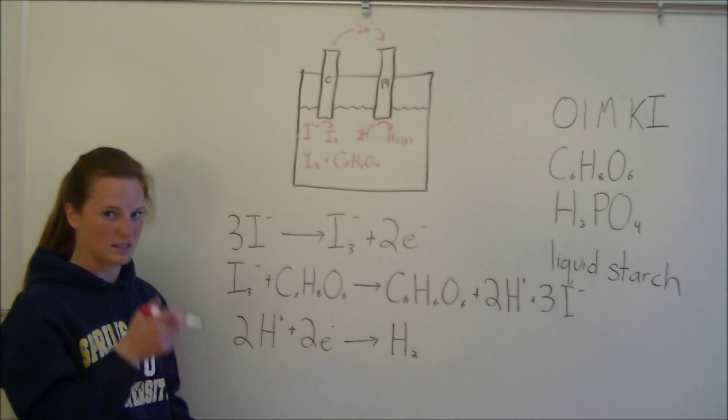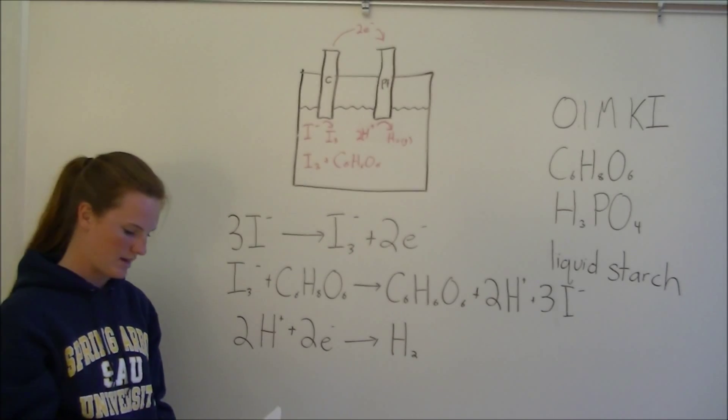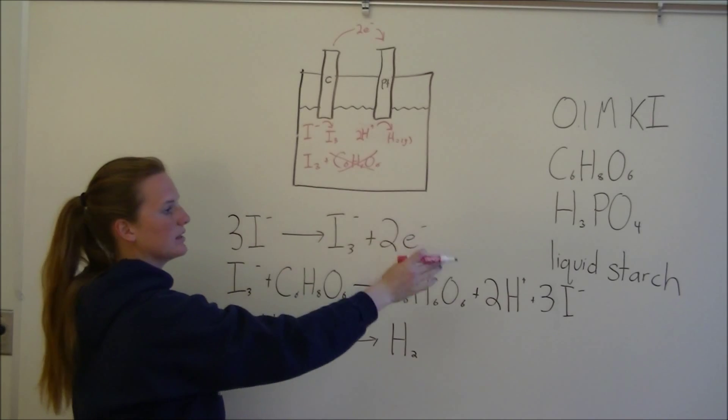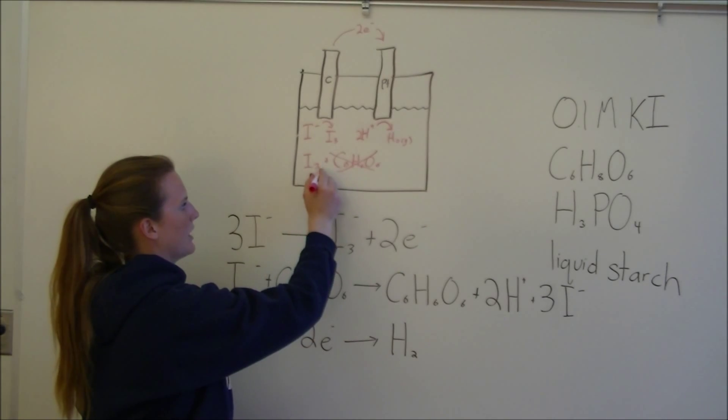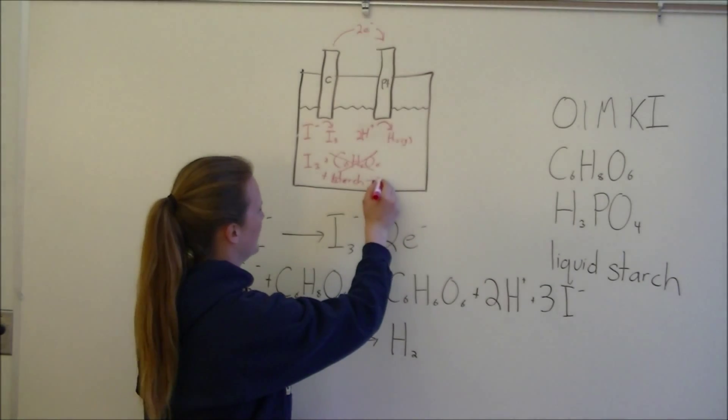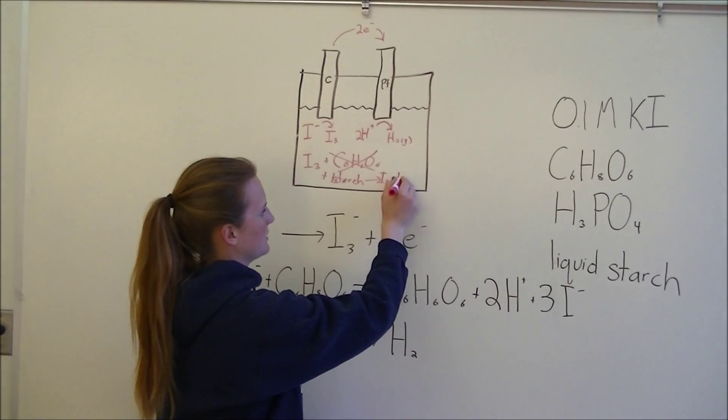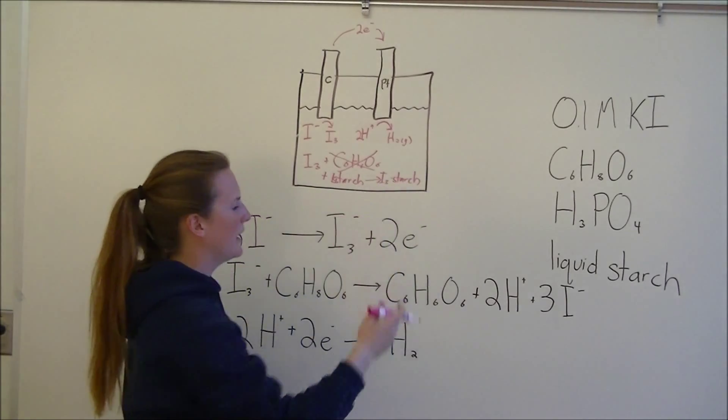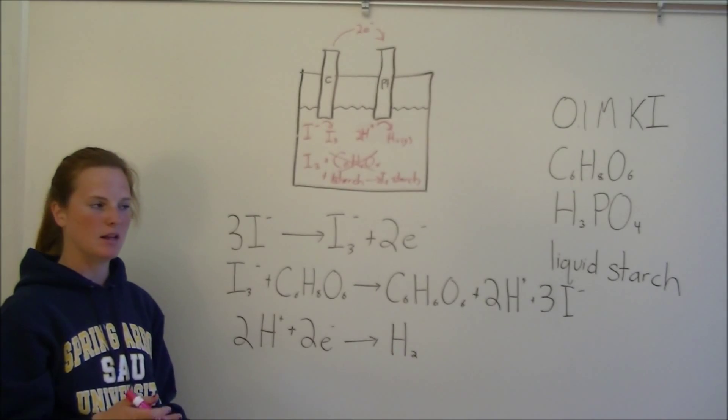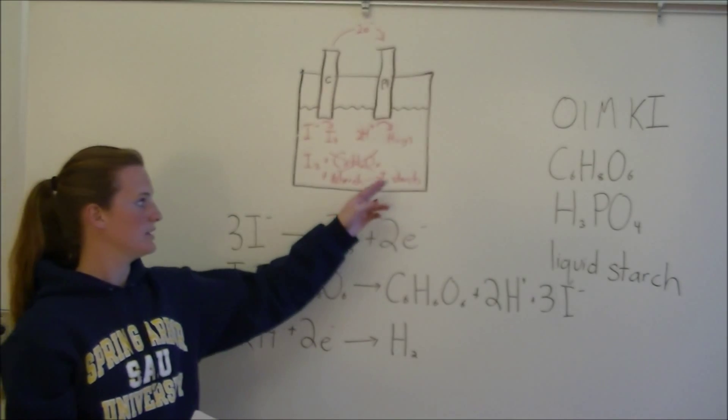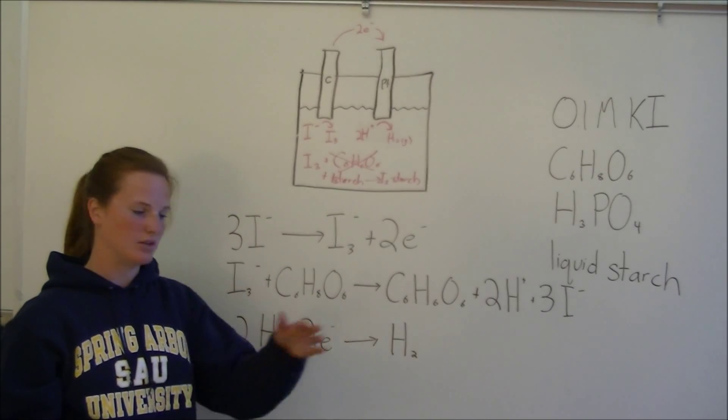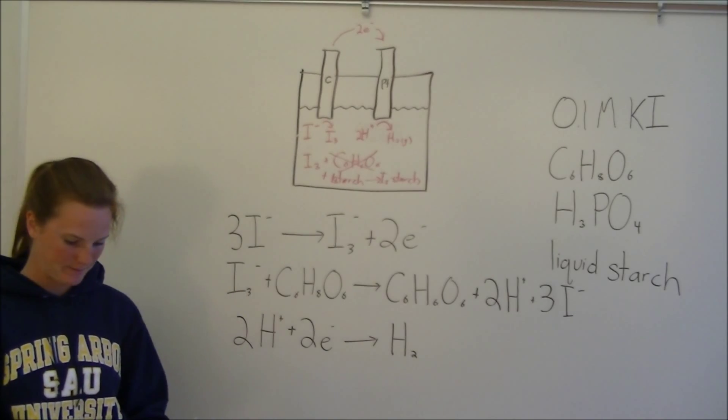The last reaction that goes on with this experiment is what's going to change the color so we can have a definite endpoint. When there's no more ascorbic acid for the iodine to react with, that's when the liquid starch is going to come into play. The iodine is going to react with the liquid starch to form this I3 starch complex. What's really cool about this thing is it's this blue, blackish, dark color, so it's really obvious that it's different from the orange juice color. You can tell as soon as this black thing is produced that there's no more ascorbic acid, and that's the endpoint.